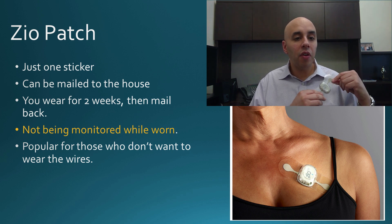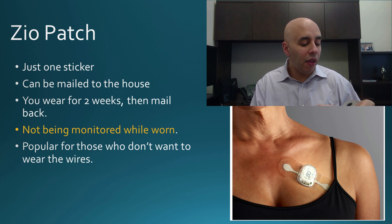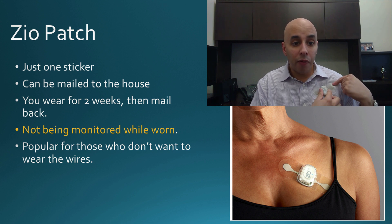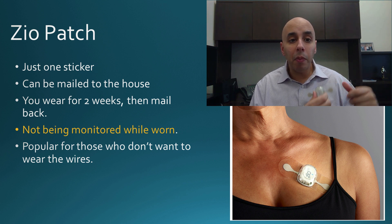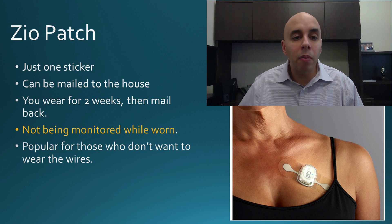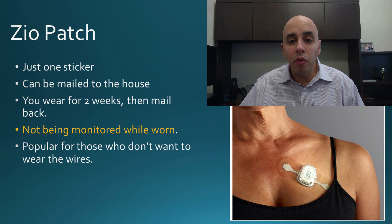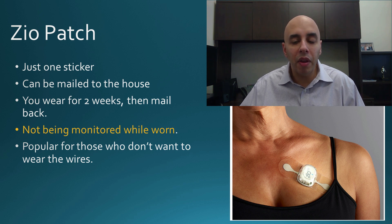One company came out with what's called the Zeo Patch. This is basically a sticker that sits on the chest wall, and they mail it to you. You place it, wear it for two weeks, and then mail it back. During that time, you are not monitored by an EKG technician — they review it for results after you mail it back. Patients do like this quite a bit because it is pretty convenient to wear.